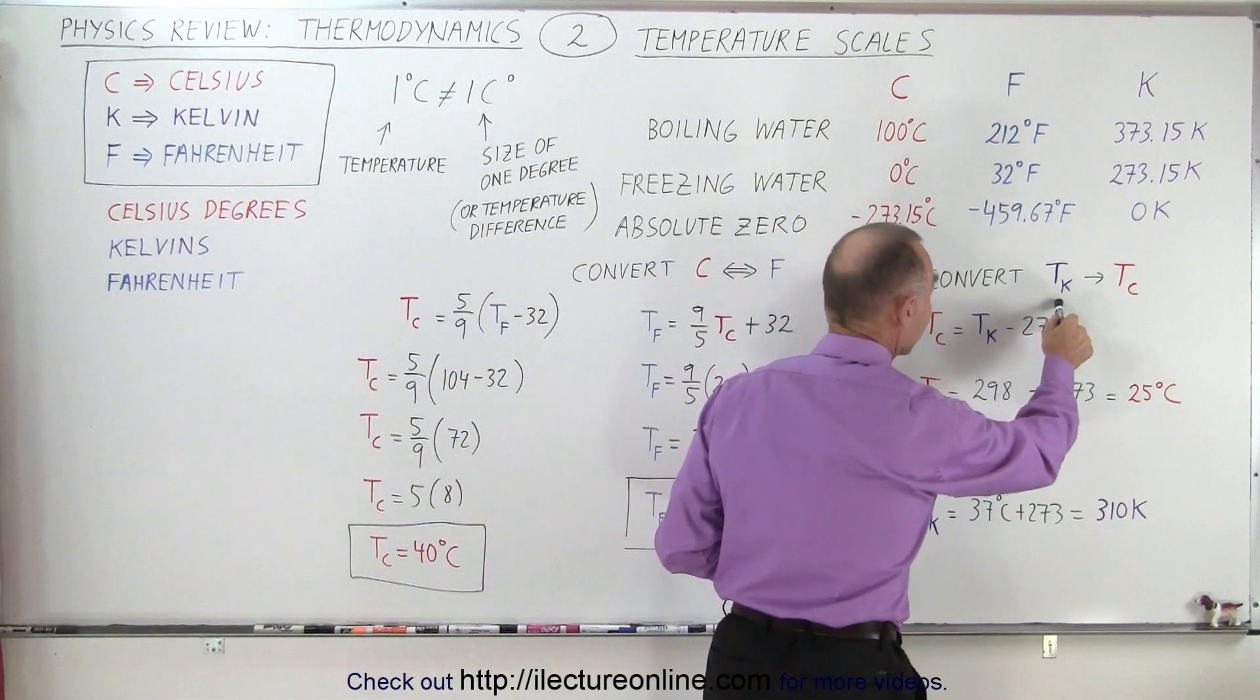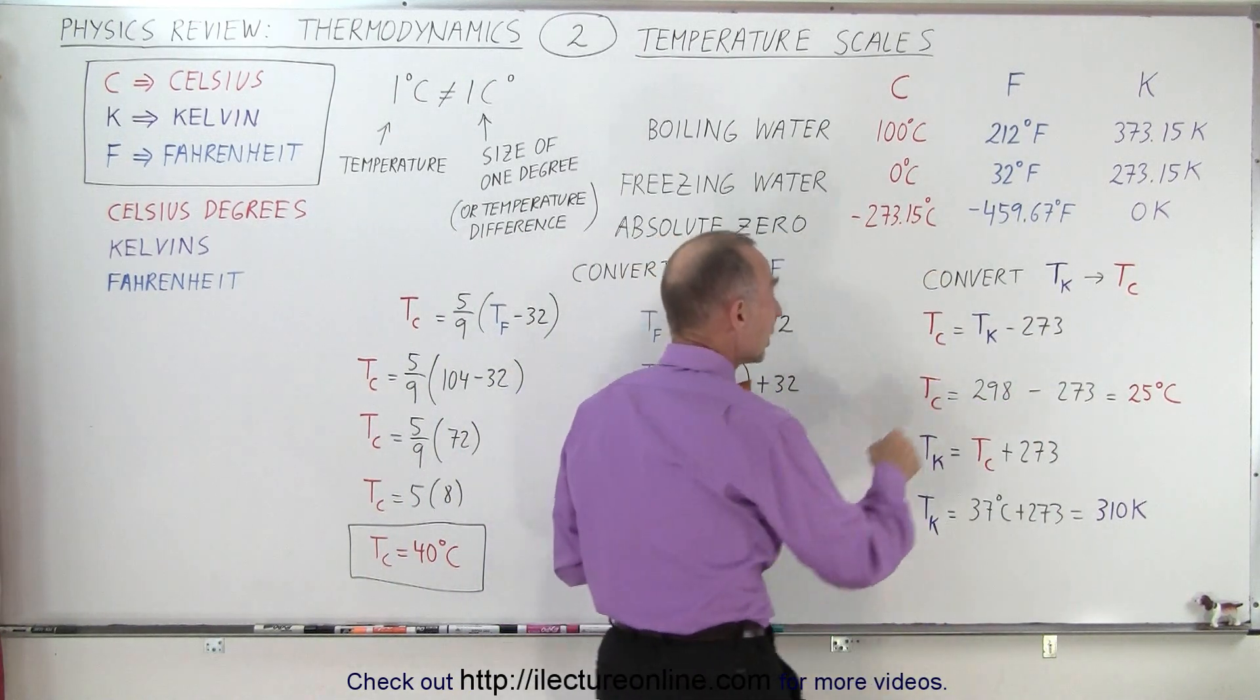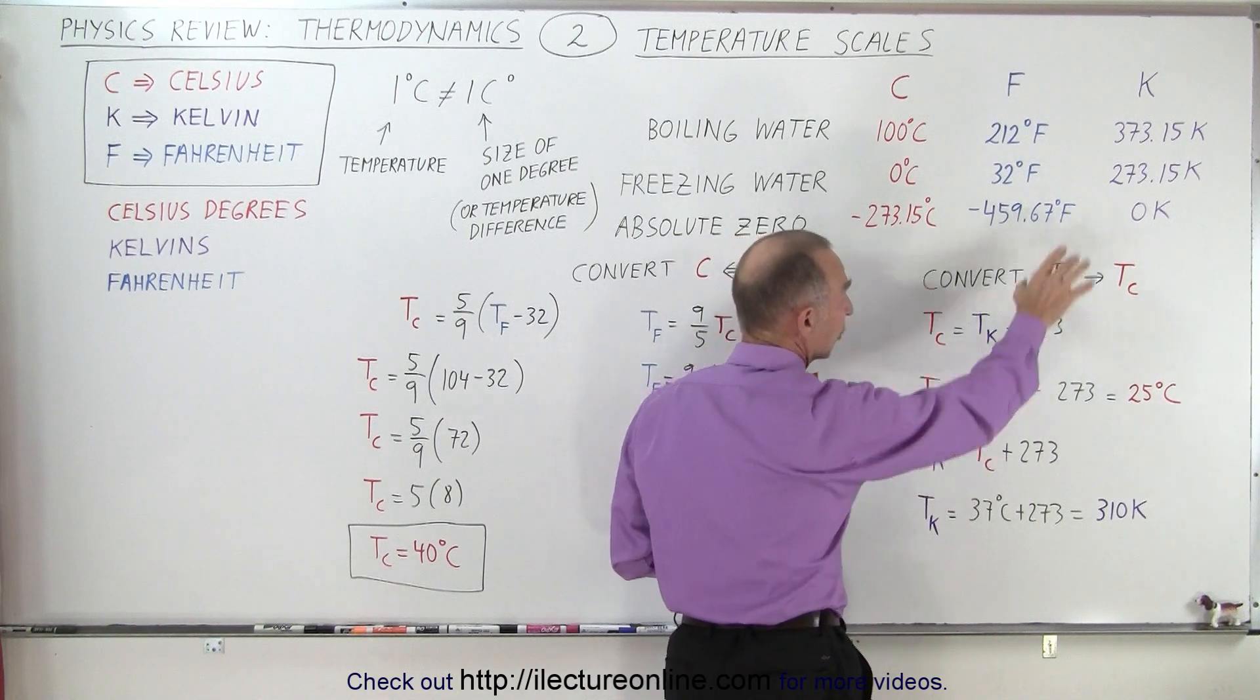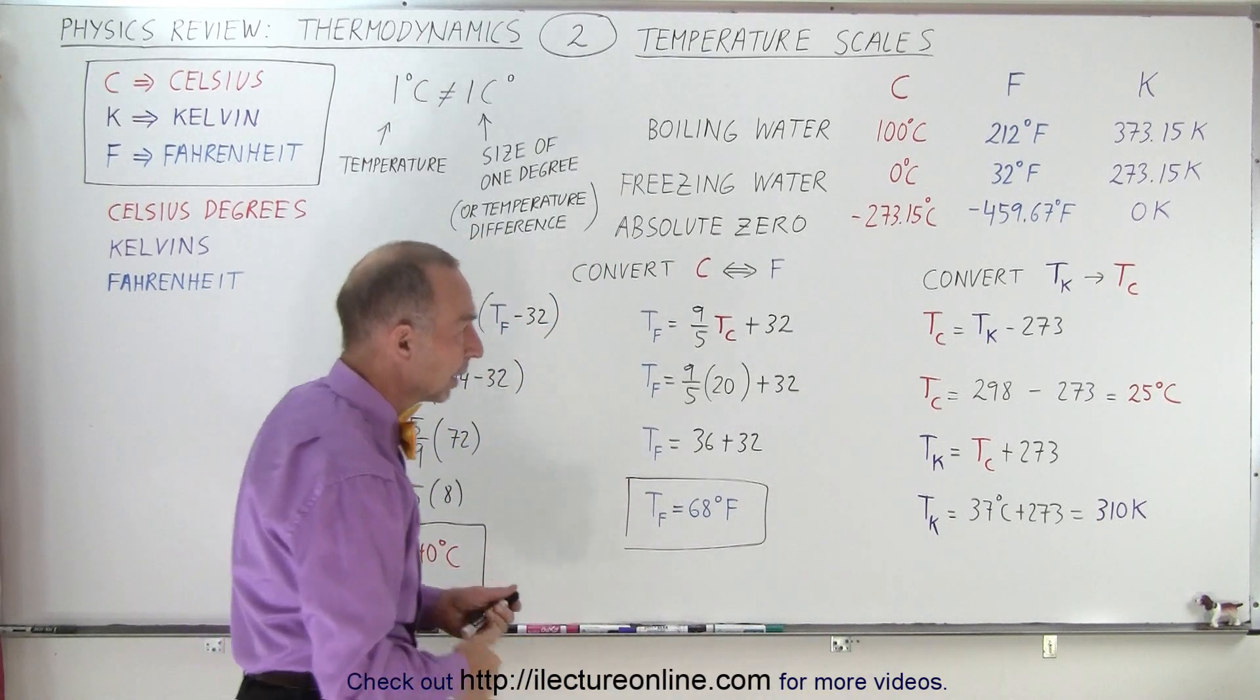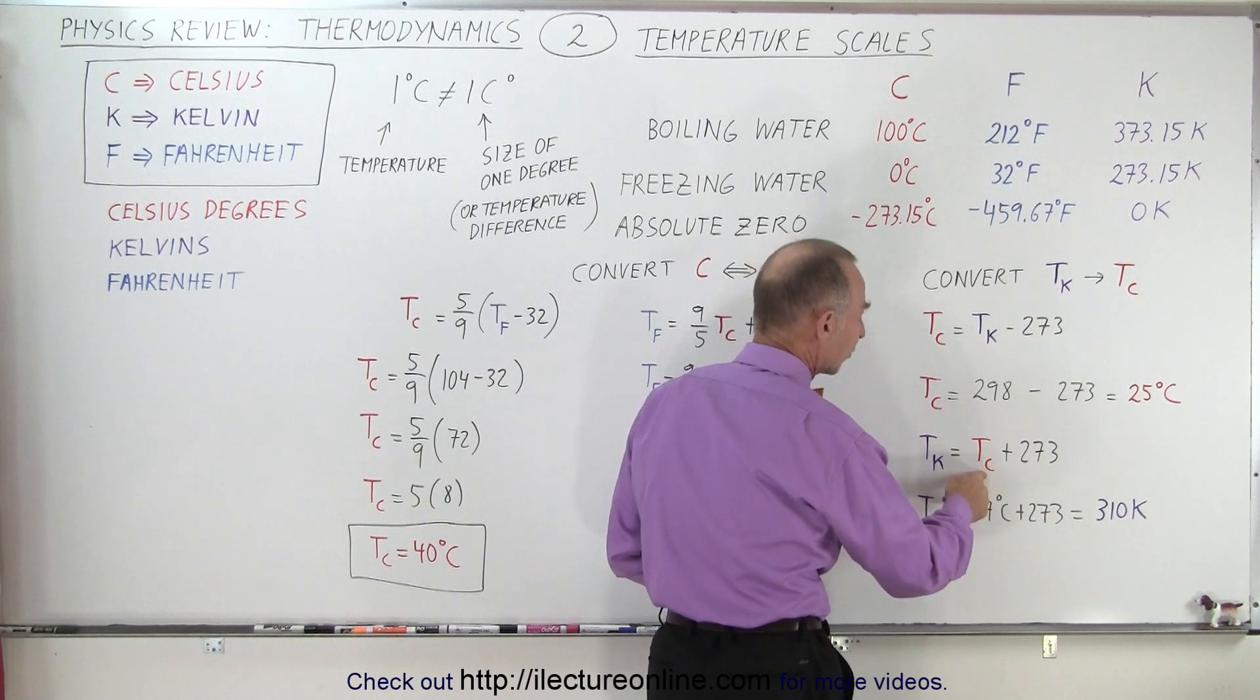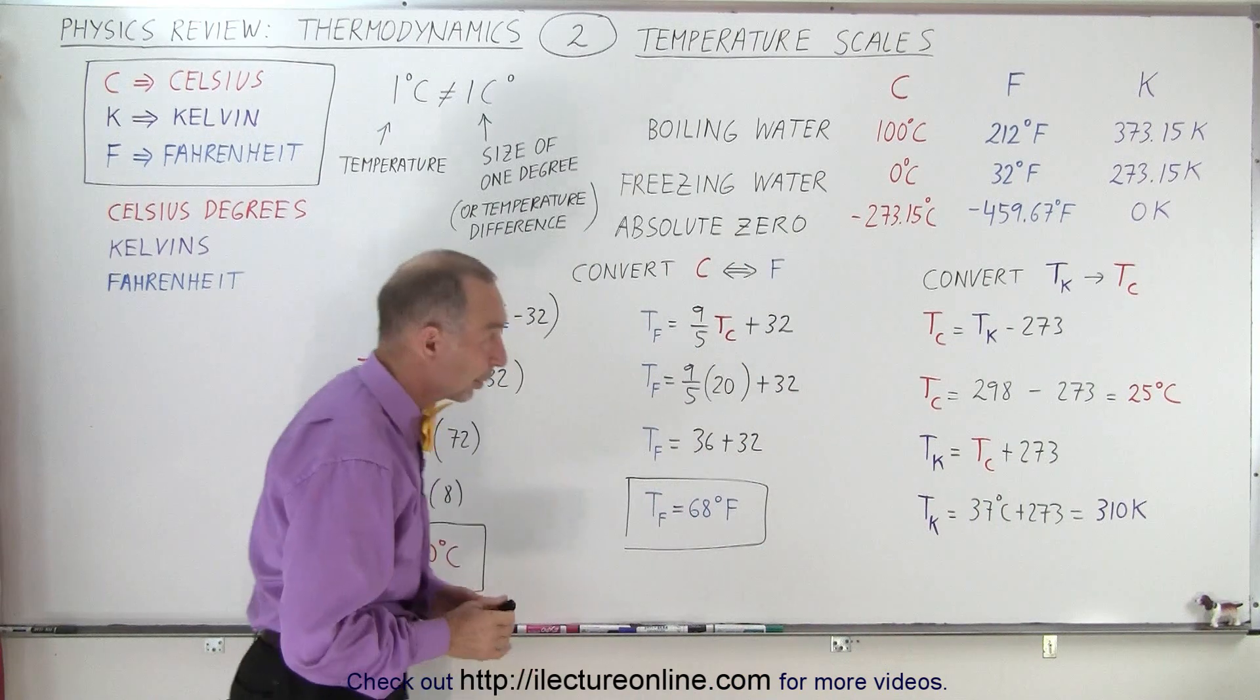Going back and forth between Kelvin and Celsius degrees, the way we do that is to go from Kelvin to Celsius, we simply subtract 273. Notice that we rounded it off, it's actually 273.15, but typically we just say 273. In the other direction, we take the temperature scale in Celsius degrees, we add 273 to get to Kelvin, so that's fairly straightforward.